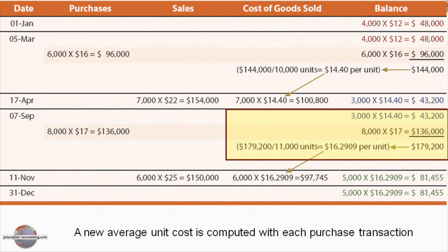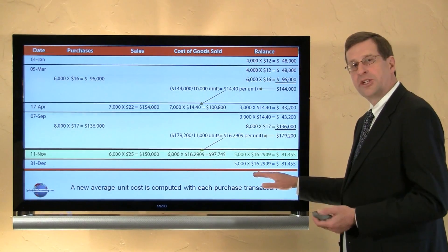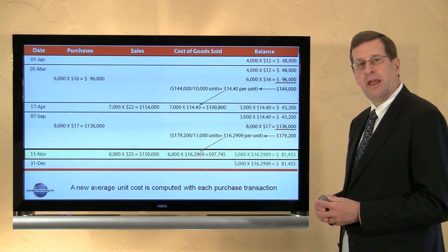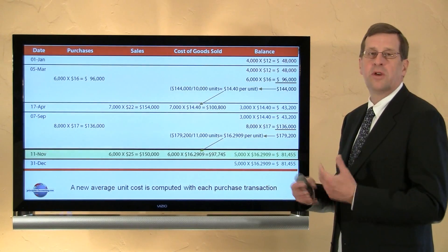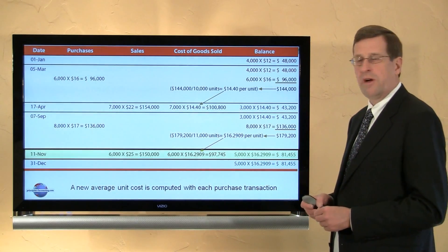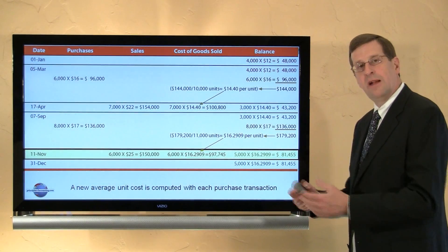We're re-averaging — establishing a new benchmark for the continuing perpetual average cost of what's on hand. When we sell 6,000 units on November 11th, we assign the unit cost of $16.29, for a total of $97,745 cost of goods sold, and we're left with 5,000 units in inventory at $16.29. Be sure not to round too much on your per-unit cost — a tenth of a penny multiplied by 100,000 or a million units adds up significantly. Let your calculator carry the decimal for several places. A new average unit cost must be computed with each purchase and carried forward in your accounting records.